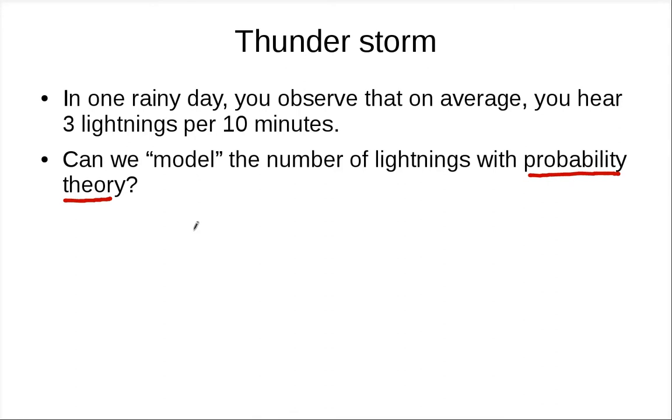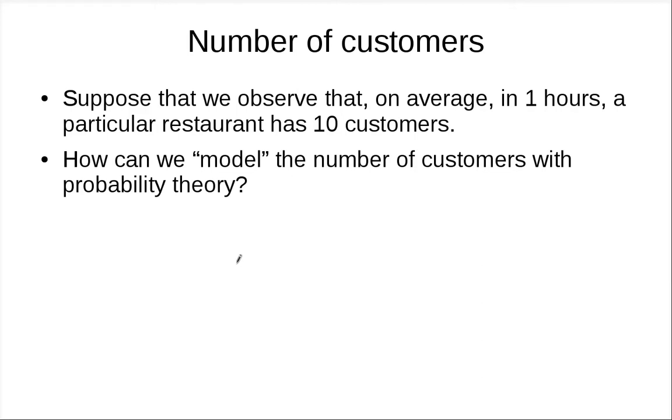In this situation, you might think it's useless to model the number of lightnings. Let's look at another example. You have a restaurant and observe that on average, you have 10 customers per hour. This number depends on the time of day. Let's assume we only look at customers from 12 o'clock to 1 o'clock in the afternoon.